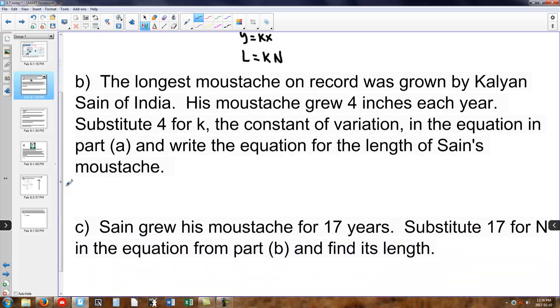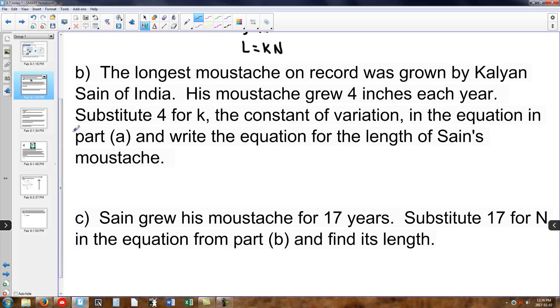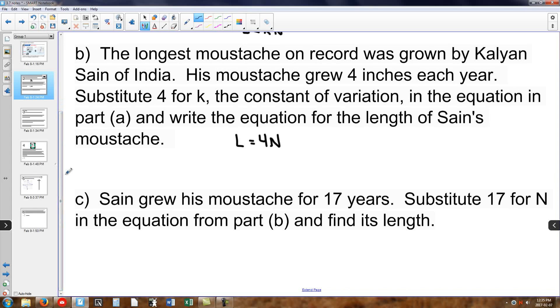That's the next step. Here in part b, we're told that the longest mustache on record is known by Kalean Sane of India. His mustache grew 4 inches each year. So that would be our k value, so we're going to put k in. Now our equation is l equals 4n, meaning that if we want to know how long the mustache would be, all we have to do is take 4 times the number of years he was growing it. This is a much better equation than just l equals kn, because now we know what k is.